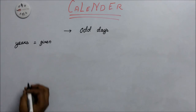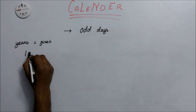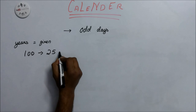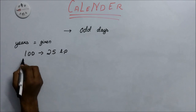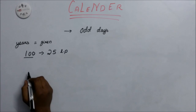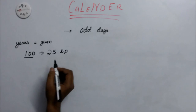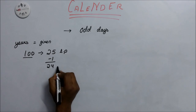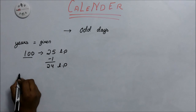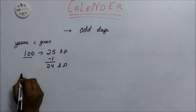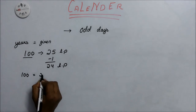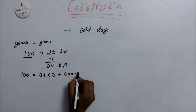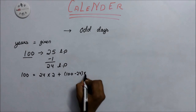When years are given, we take 100. Since 100 divided by 4 gives 25, it consists of 25 leap years. But 100 is a century year, and for century years we divide by 400. Since 100 is not divisible by 400, we cancel one leap year, leaving 24 leap years. To calculate odd days in 100 years: 24 leap years contribute 2 odd days each, and the remaining 76 ordinary years contribute 1 odd day each.